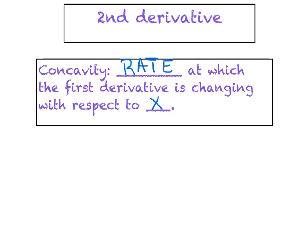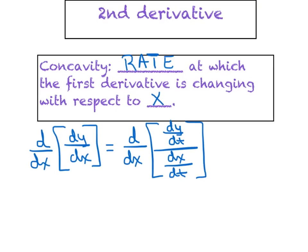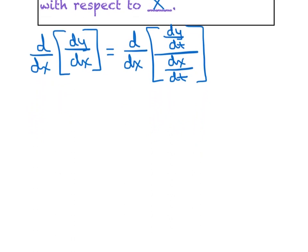Concavity is the rate at which the first derivative is changing with respect to x, and that definition holds true regardless of what mode we're in. So if we want to take the second derivative, it's the rate at which the first derivative is changing with respect to x. We're going to rewrite this: the derivative with respect to x of (dy/dt)/(dx/dt). My next move is a very subtle, sneaky move, and I'll do my best to explain it.